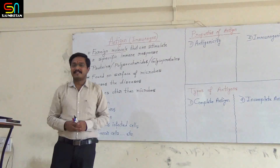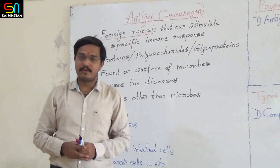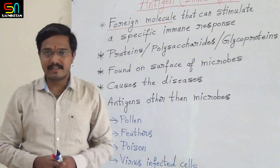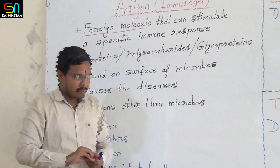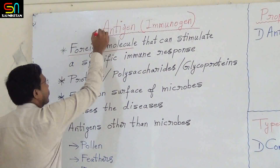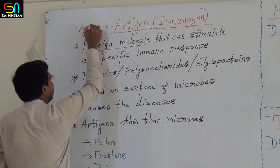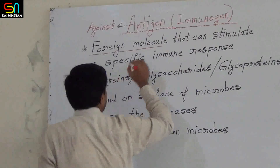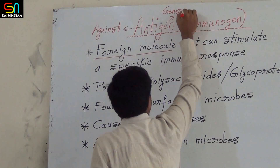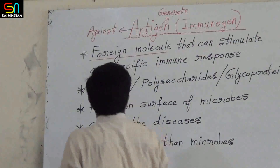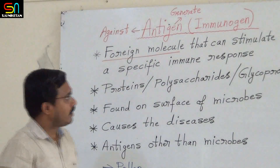Today we are going to discuss about antigens. Many times I have used this word antigens, so let us discuss briefly about antigens. Antigens — 'anti' means against, and 'gen' means generate. This is the actual meaning of antigens: anti means against, gen means generate.